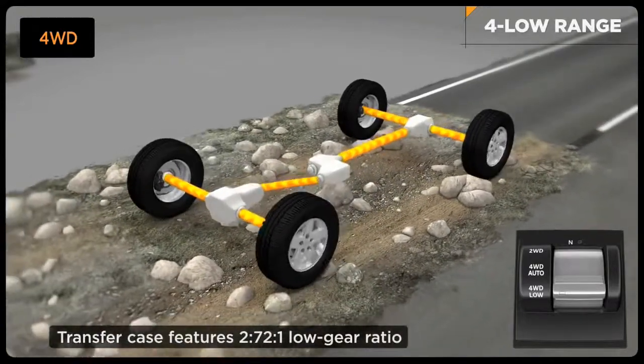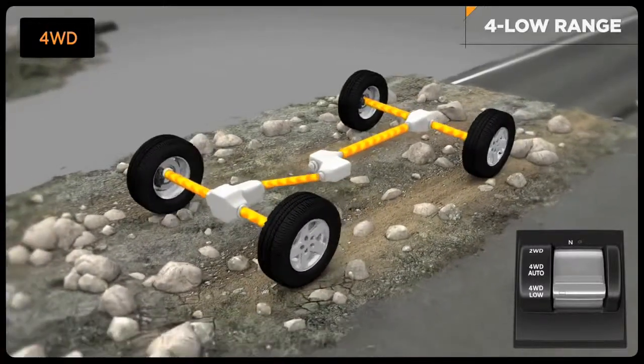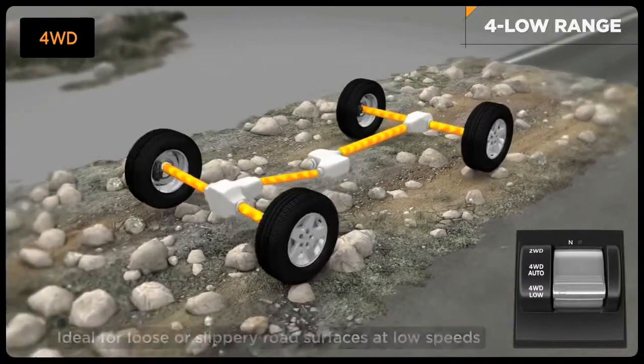This robust transfer case boasts a 2.72 to 1 low-gear ratio that gives Liberty incredible amounts of engine torque for rock crawling at low speeds.